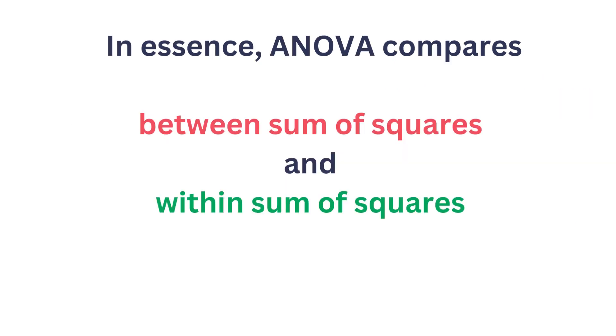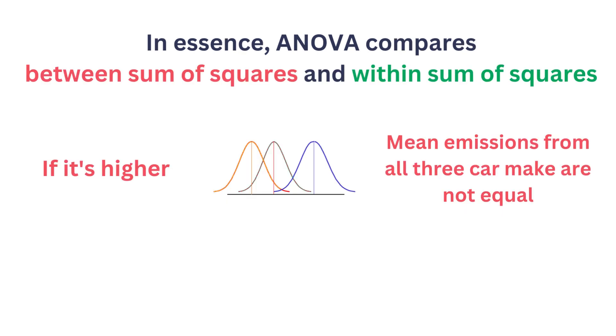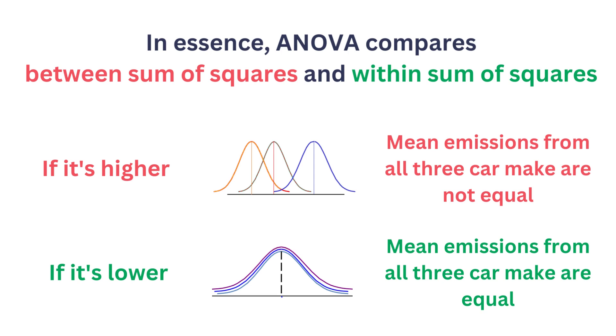In essence, ANOVA compares between sum of squares and within sum of squares. If it's higher, mean emissions from all three car makes are not equal. And if it's lower, we can say that mean emissions from all three car makes are equal.